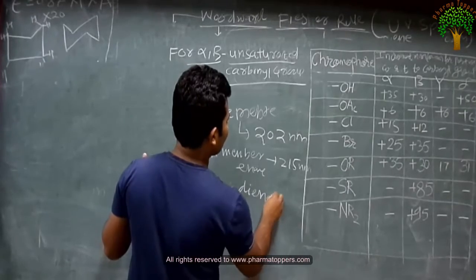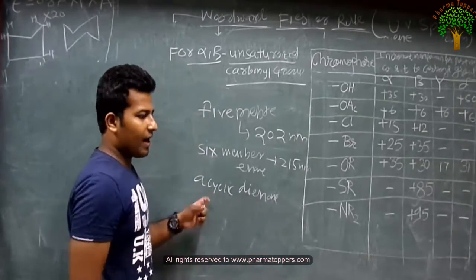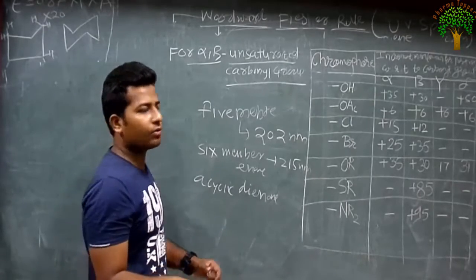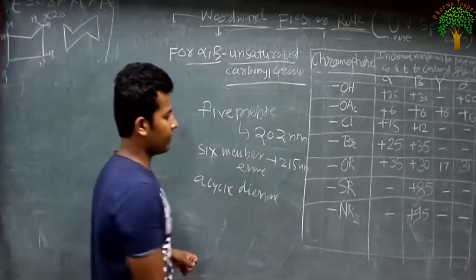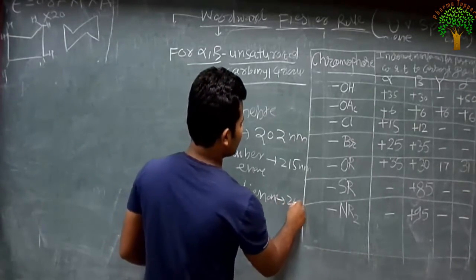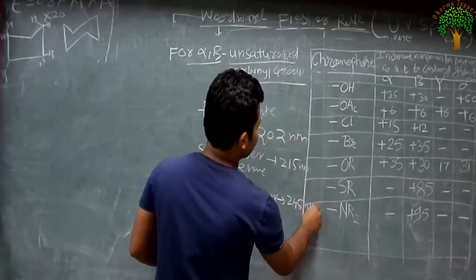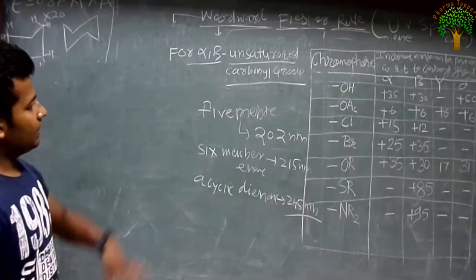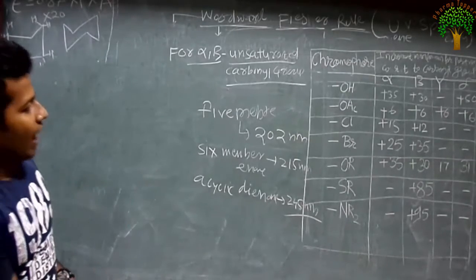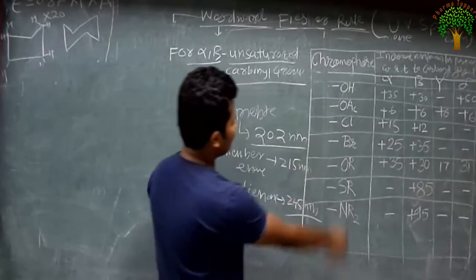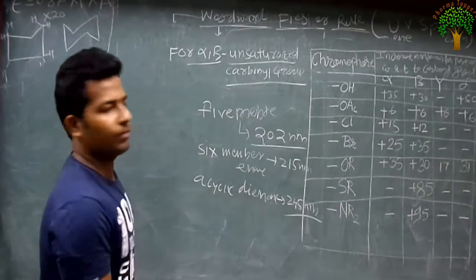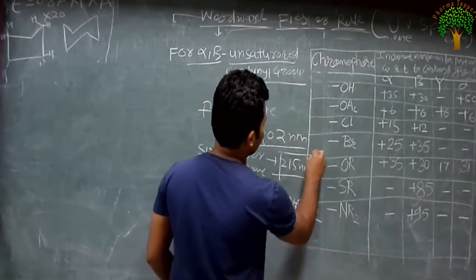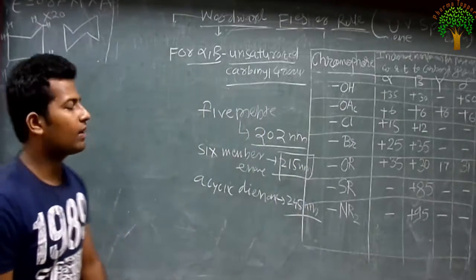Acyclic diene means those which are aliphatic, which are the diene with carbonyl. That is called acyclic diene. The basic diene value is 245 nanometers. Now, why does the five-membered ring have 202 nanometers, which is less than the six-membered ring which has 215 nanometers?